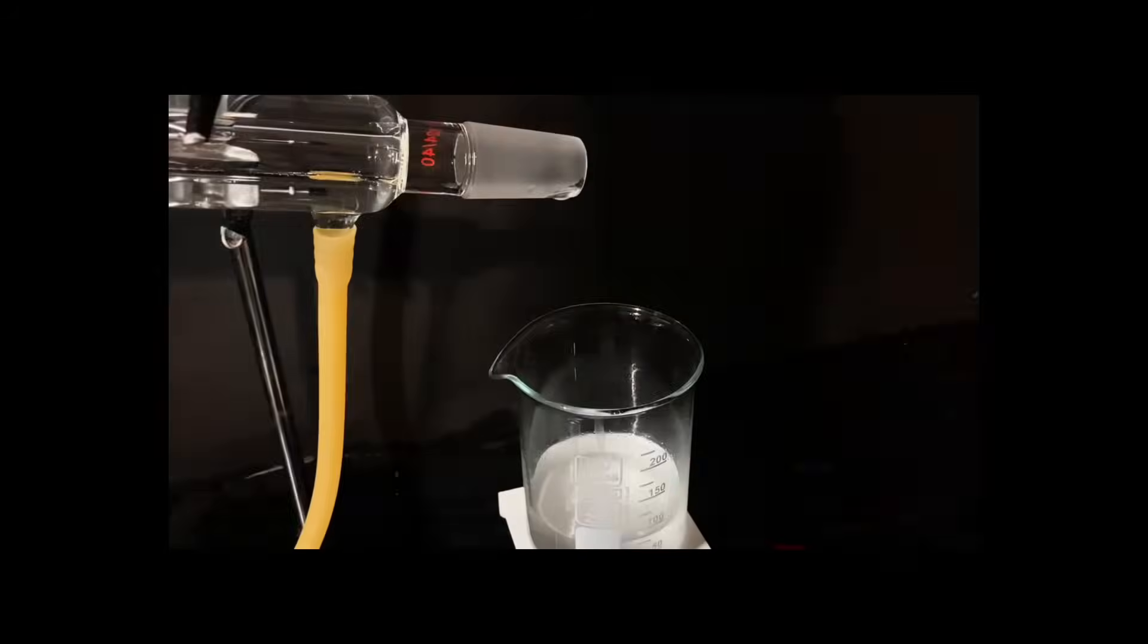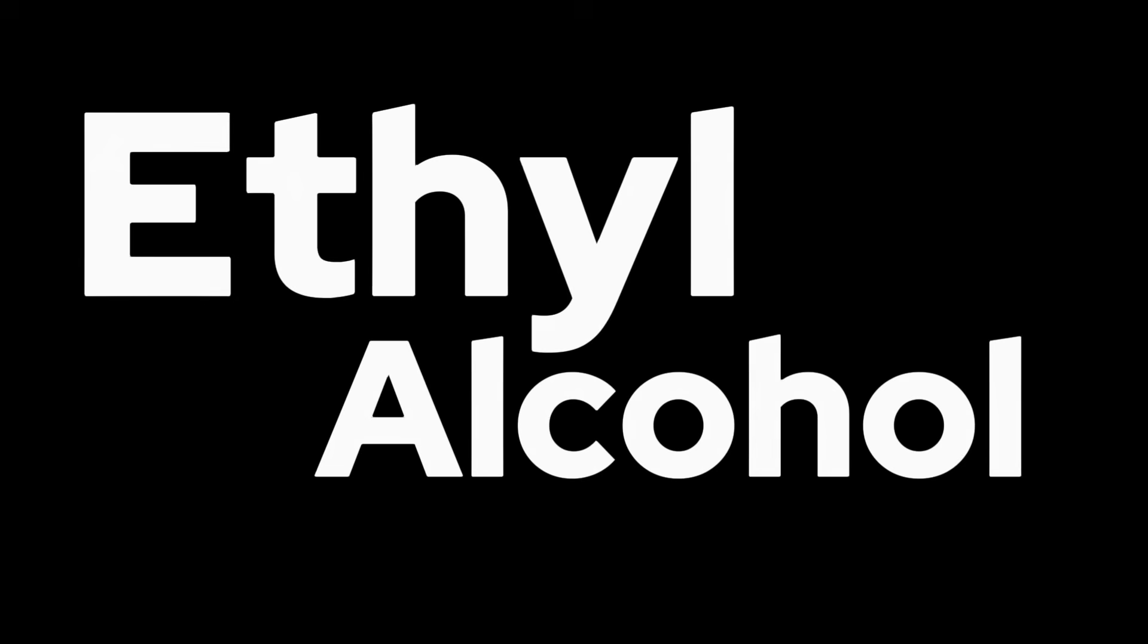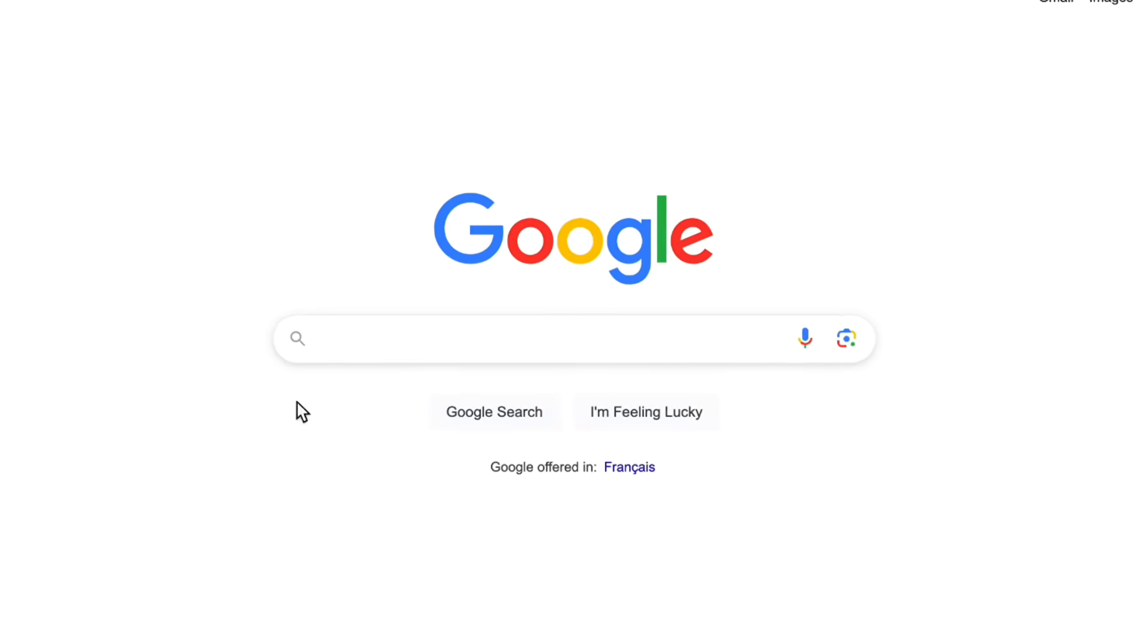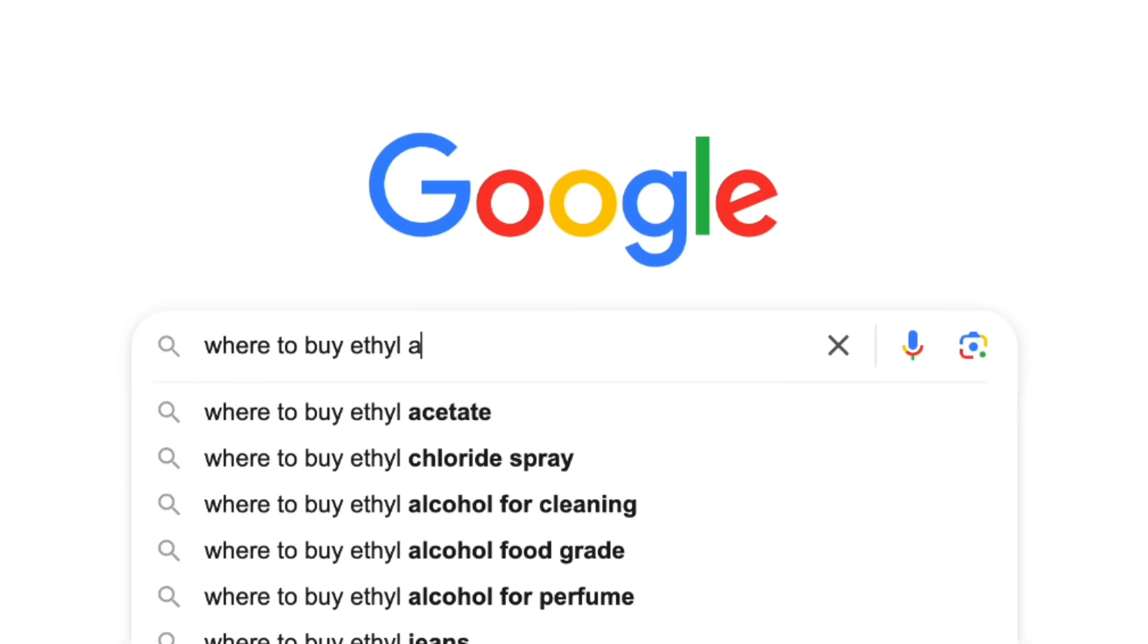In all labs, there's this one common chemical that is annoyingly difficult to buy at a pure concentration. It's ethanol, aka ethyl alcohol. All home chemists know it's a pain to get, and so the only way to obtain it is to make it.